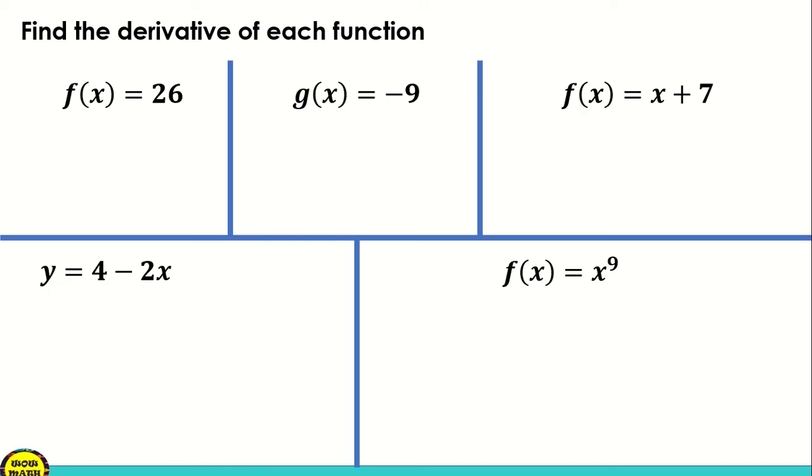So for first function, we have f(x) is equal to 26. So this is an example of constant rule. Now we're going to apply the constant rule. So in getting the derivative given a constant, kapag kukuha tayo ng derivative, tapos ang given ay constant, that is equal to 0.